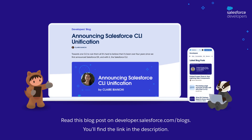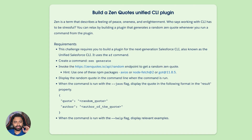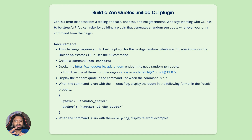You can read the blog post about CLI unification — the link is in the description. Now, back to our requirements: we need to create a new command called zen generate. When invoked, it must make a callout to the zenquotes.io/api/random endpoint to get a random Zen quote. The hints mention some packages you can use to make callouts from Node.js.